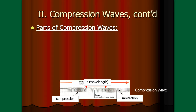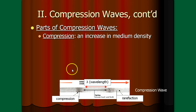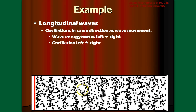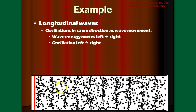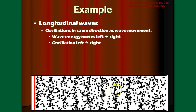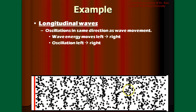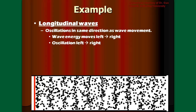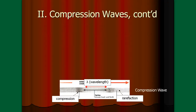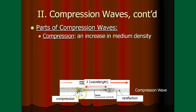There are really only three basic terms we need to know. Compression can be defined as an increase in medium density — basically it's where the stuff gets closer together. You can see the darker areas moving across in the animation; it's actually the darker areas, the compressions, that we follow to watch the wave move. The reason your eye follows the compression is because the dots are a little bit closer together, making it darker.